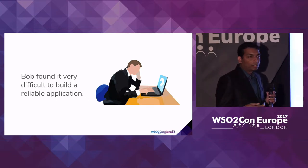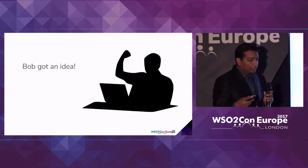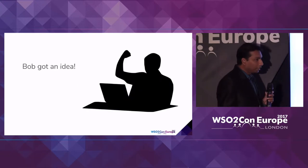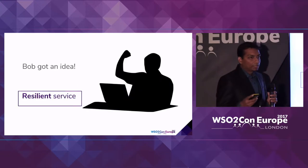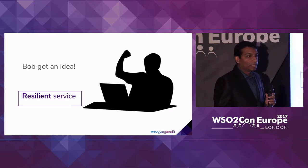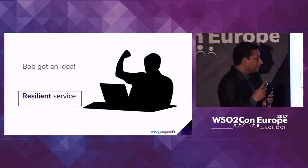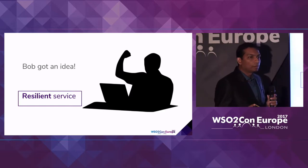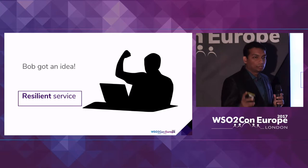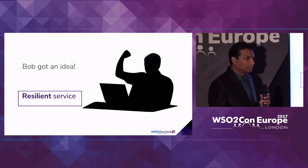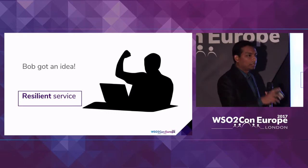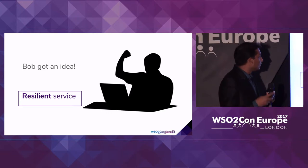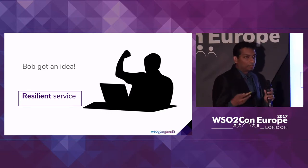He thought about it a lot and finally got an idea. The idea is to write a new service — a new resilience service — which hides all the issues happening in the backend services and provides an interface to the outside world with 100% availability.